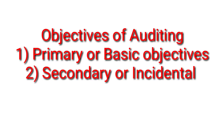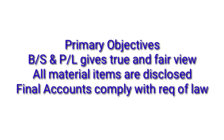Specifically, a person who is by profession a Chartered Accountant will check your books of accounts. There are two types of objectives: primary and secondary. We will focus on primary objectives first. Primary objectives means basic objectives — our financial statements, balance sheet, as well as profit and loss accounts, should show a true and fair view.